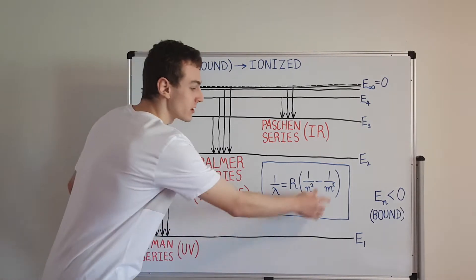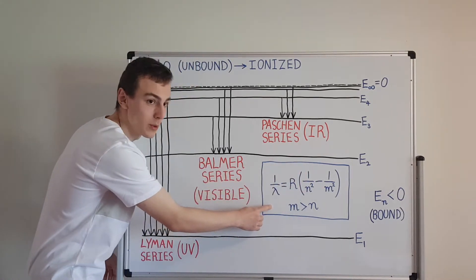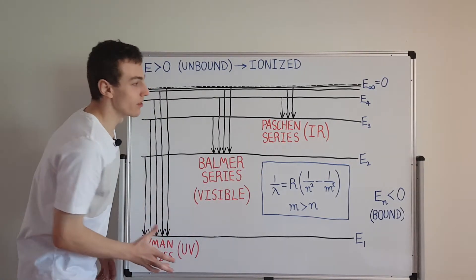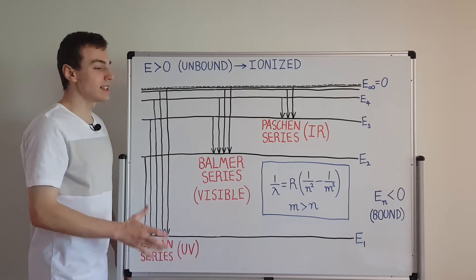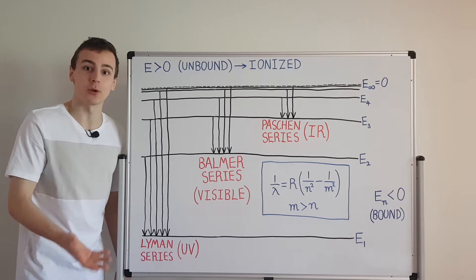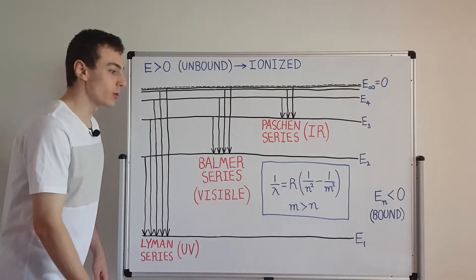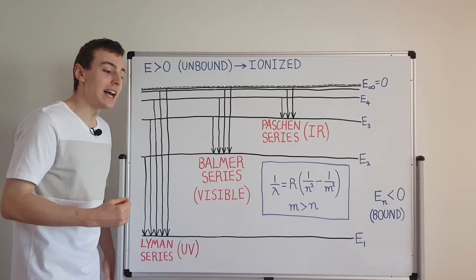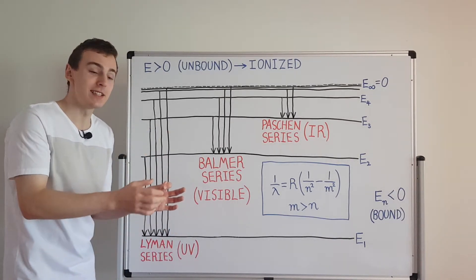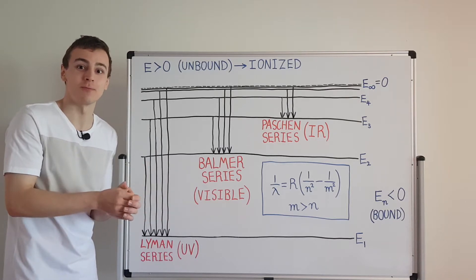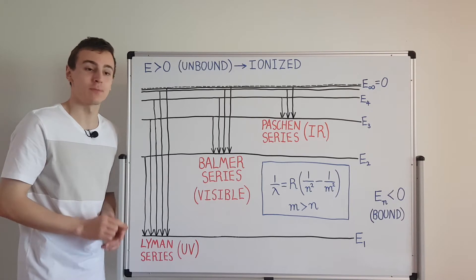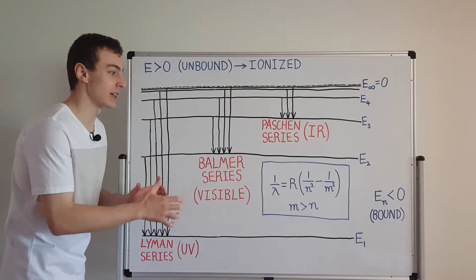This is the Rydberg formula, and we're going to be using this very shortly. First of all I want to explain this diagram. This is a visualization of all the allowed energies for an electron in the Bohr model. The electron behaves as if it was a planet orbiting the Sun — in this case the Sun is the nucleus. We're going to focus on hydrogen where there's just one positive charge.